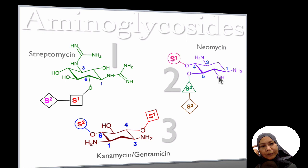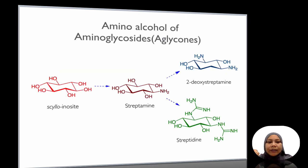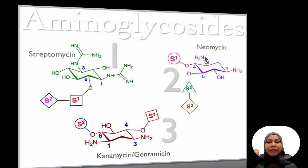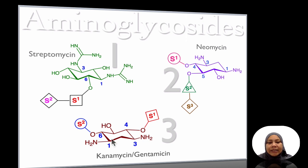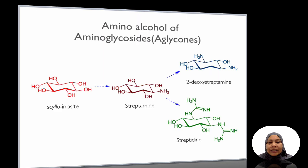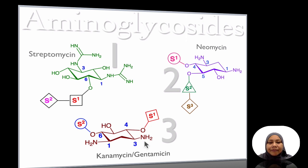The second family is neomycin — the aglycone is 2-deoxy streptamine, with one sugar linked at C4 and two more sugars linked at the C5 position. The third family is kanamycin and gentamicin, which also has 2-deoxy streptamine as the aglycone, with two sugar molecules appearing at C4 and C6.